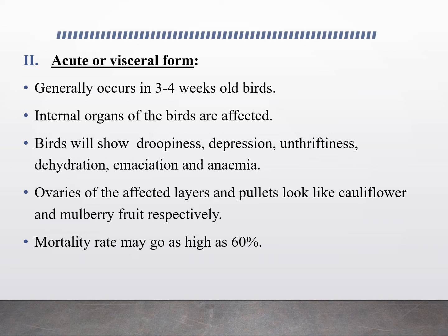The next clinical finding is the acute or visceral form. This form generally occurs in 3 to 4 week old birds. The internal organs are mostly affected. Birds will show droopiness, depression, unthriftiness, dehydration, emaciation, and anemia. The ovaries of affected layers and pullets look like cauliflower and mulberry fruit respectively. Mortality rate in this form may go as high as 60%.